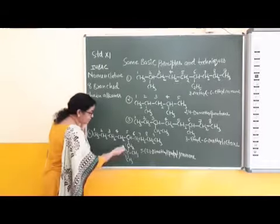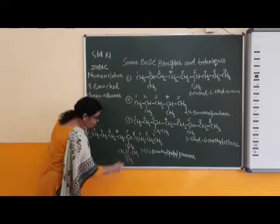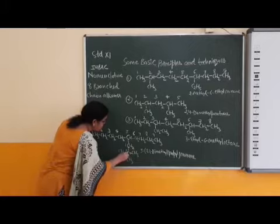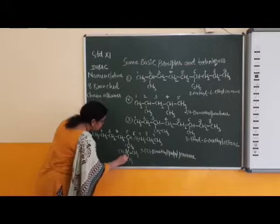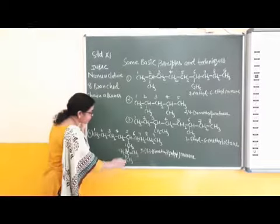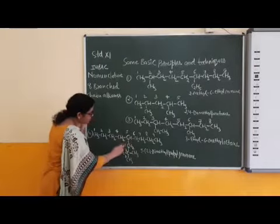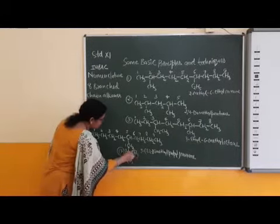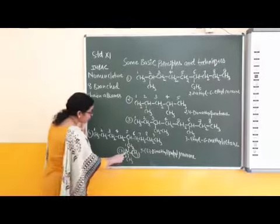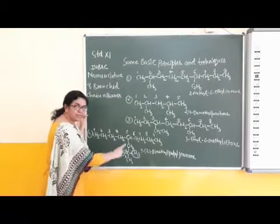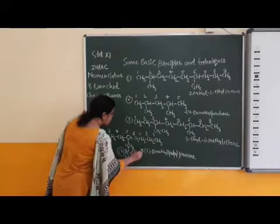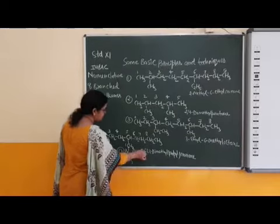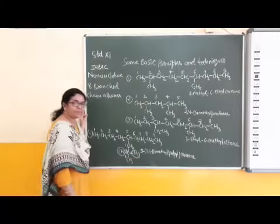Therefore, the main side chain has 3 carbon atoms — that is propyl — with further branching at the middle carbon. For counting the side chain, the carbon attached to the main chain gets the first number: 1, 2, 3. Two methyl branches are attached at the 2nd carbon of the side chain. For this highly branched side chain, first the number of the carbon in the parent chain is written: 5. Then a dash, then in small brackets the complete name of this side chain.